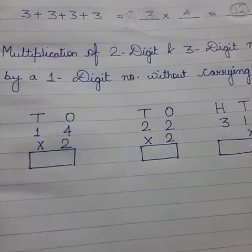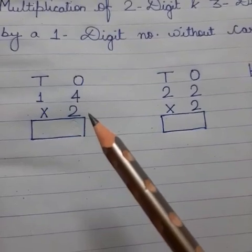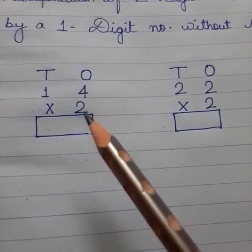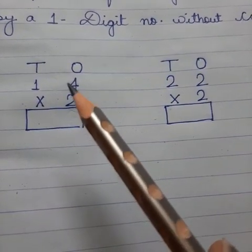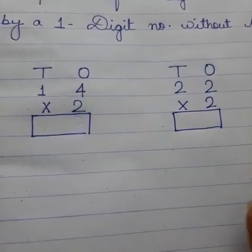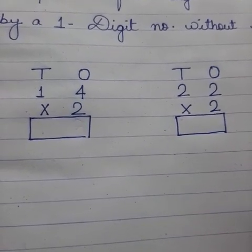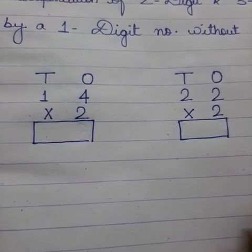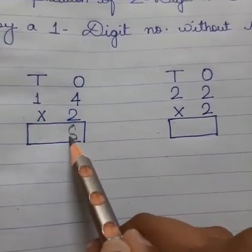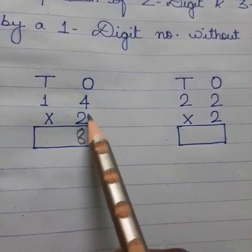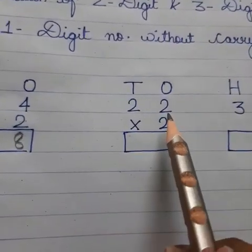We start from the ones place. We read the table of 2: how many times? Four times. So 2 one is 2, 2 twos are 4, 2 threes are 6, 2 fours are 8. Now in the tens place, 2 one is 2. In the same way, we start from the ones place.